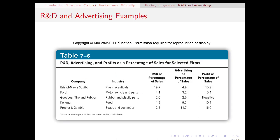Let's compare a few different industries and how much they tend to do R&D and how much they tend to advertise. A pharmaceutical company does a huge amount of R&D — the patent races that exist in the pharmaceutical industry are a big reason for that. On the other hand, they don't tend to do quite as much advertising because once they get their patent, they effectively get a monopoly for a period of time on that good. Compare that to Kellogg, a food company, where there's really not a lot of R&D needed, but they are going to do a lot of advertising to convince customers that their product is better than others. With food, there's a huge amount of competition.